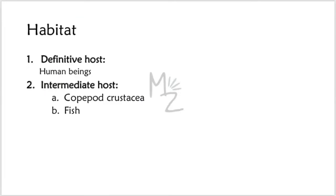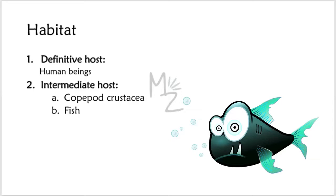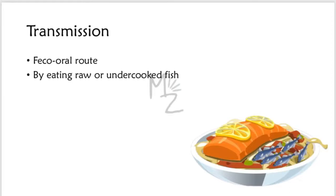Habitat — definitive host: human beings. Intermediate hosts: Diphyllobothrium latum has two intermediate hosts, both freshwater. The first is copepod crustacea and the other is freshwater fish such as pike, trout, and perch. Reservoirs include bears, minks, canines, felines, etc. Transmission: the route of transmission is feco-oral, and human beings are infected by ingesting raw or undercooked fish containing larvae — the plerocercoid/sparganum larvae.